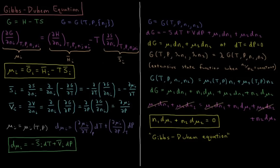The partial molar volume is equal to the partial derivative of volume with respect to number of moles of that substance, which equals d/dN_i of (dG/dP). Trading the order of derivatives, we have d/dP times (dG/dN_i), so the partial molar volume is the partial derivative of the chemical potential with respect to pressure.